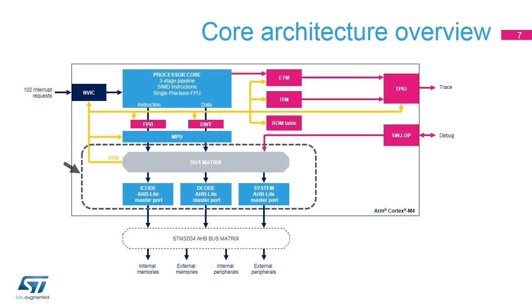The Cortex M4 has neither a cache nor internal RAM. Consequently, any instruction fetch transaction and data access is steered to the internal bus matrix. This bus matrix selects the output AHB-Lite master port according to the address and the access type, instruction or data. Three AHB transactions can be in progress at a time.